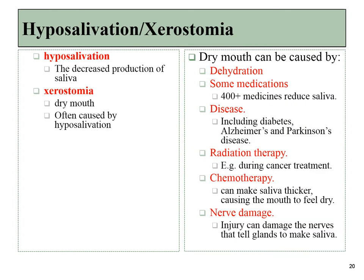If the salivary glands are not functioning properly, that can lead to a reduction in saliva production, known as xerostomia. That can cause all sorts of conditions, because saliva has a number of very important functions within the oral cavity. There are a lot of reasons why somebody could be suffering from xerostomia — that includes a number of medications, or a few diseases that they may have, or maybe cancer chemotherapy. Lastly, nerve damage can also cause xerostomia, because the salivary glands are under the control of both the sympathetic and the parasympathetic nervous systems. Damage to either one of those types of nerve fibers could reduce the amount of saliva that's produced.